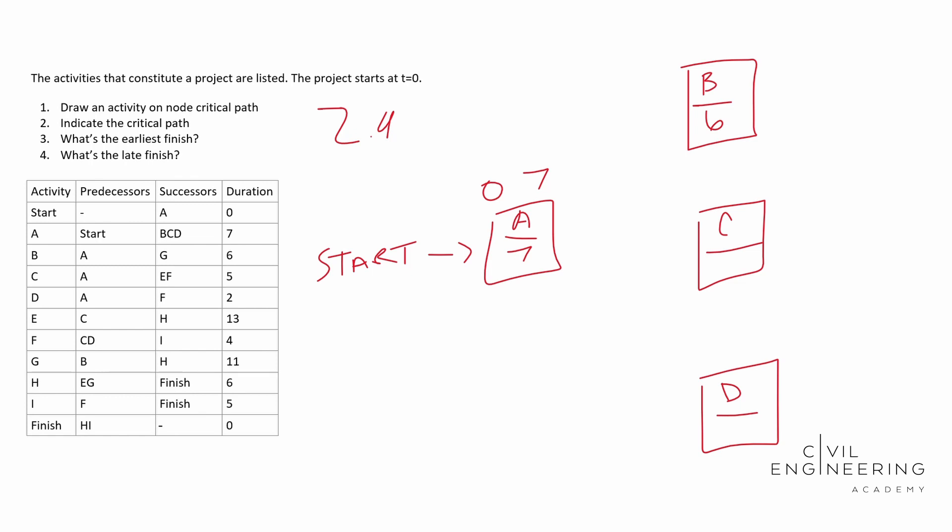So B lasts for six days. C lasts for five days. D lasts for two days. And A goes to D, A goes to C and A goes to B. All right. Awful arrows there, but we'll get the point. So now we have to find our earliest start for BC and D. And it's exactly what you think it is. It's going to be seven because B can't start until A is finished. The soonest A can get finished is on day seven. The soonest that B can get started is on day seven. Same thing for C, same thing for D. Since B is six days long, it's going to have 13 be its early finish. And then for C it's five days long. So its early finish is going to be 12. For D it's going to last two days. Its early finish is going to be nine.